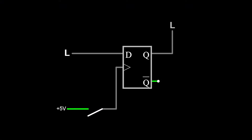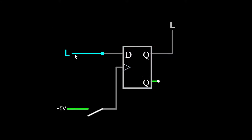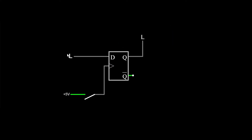Let's start with D flip-flops. A single D flip-flop has two inputs — a clock input and a data input — and two outputs: Q and Q-inverse, which is the opposite of Q. Every time you pulse the clock, the value at the data pin gets transferred to the Q output. The only way to change the Q output is to toggle the clock, so you can change the data pin as much as you want and nothing will happen until you pulse the clock.